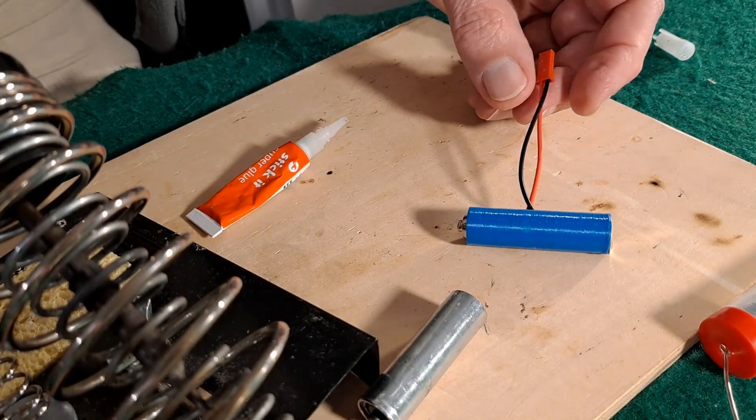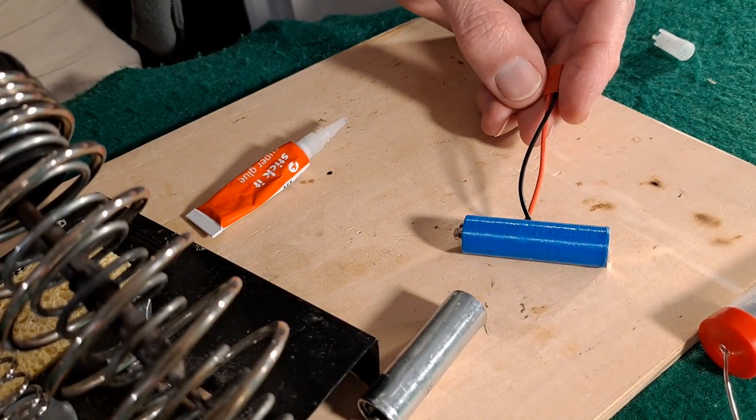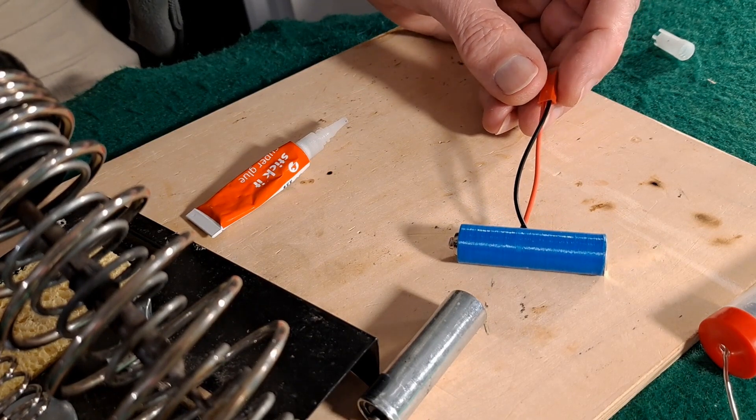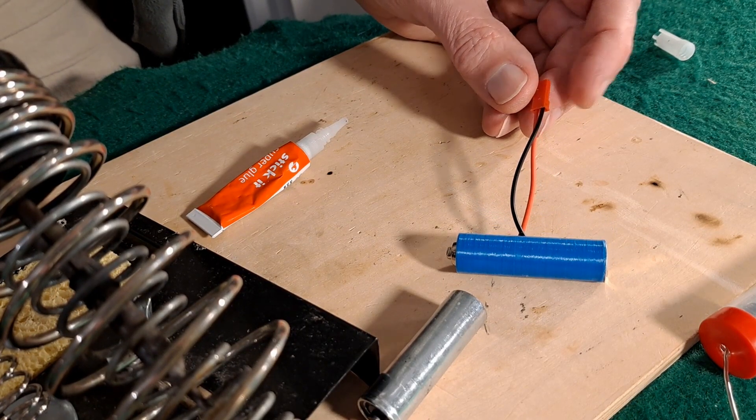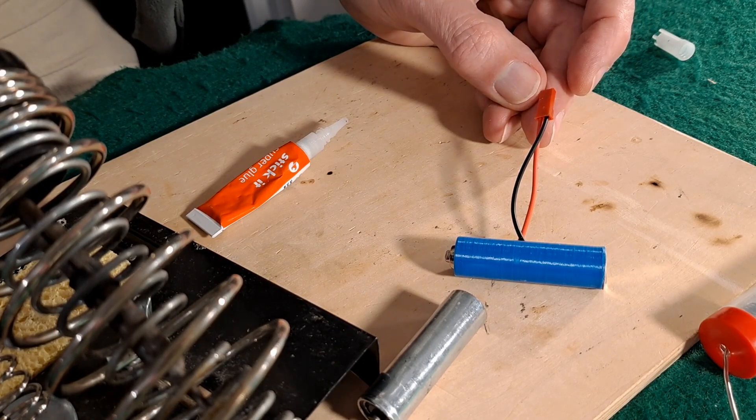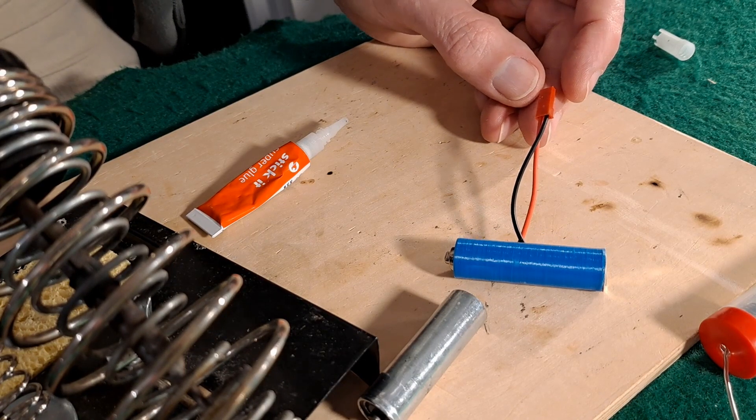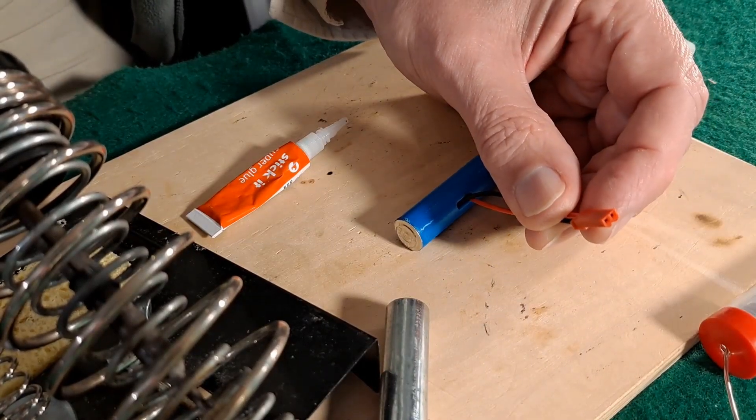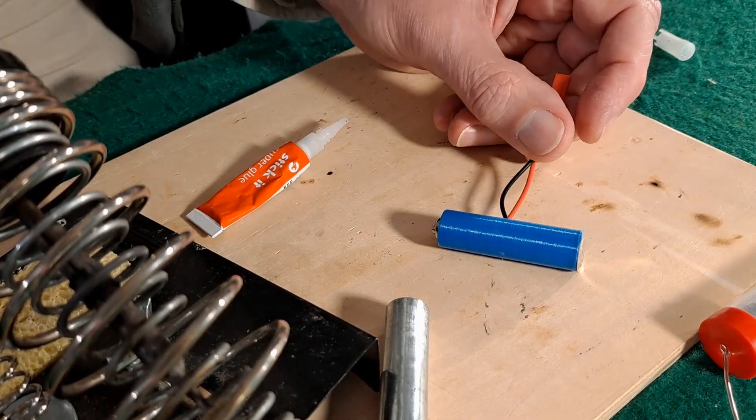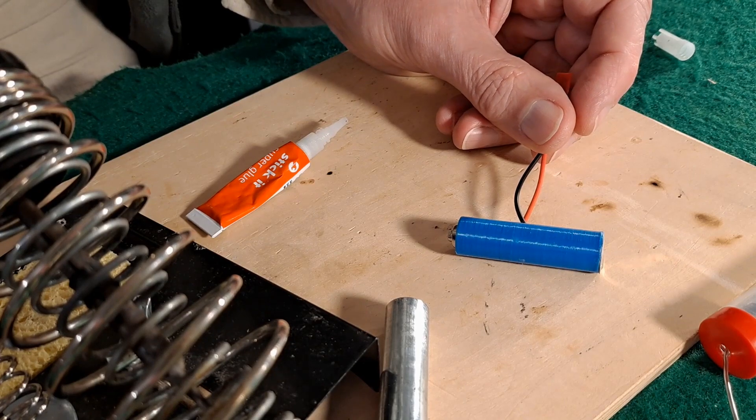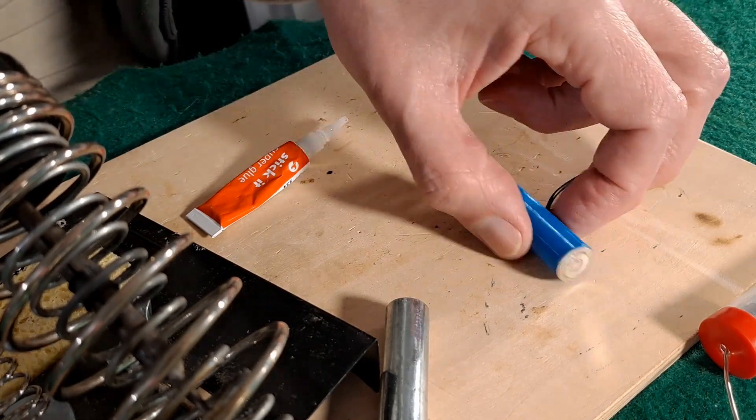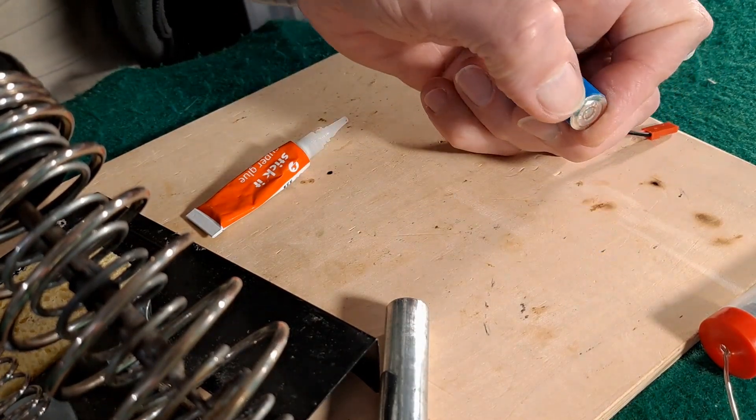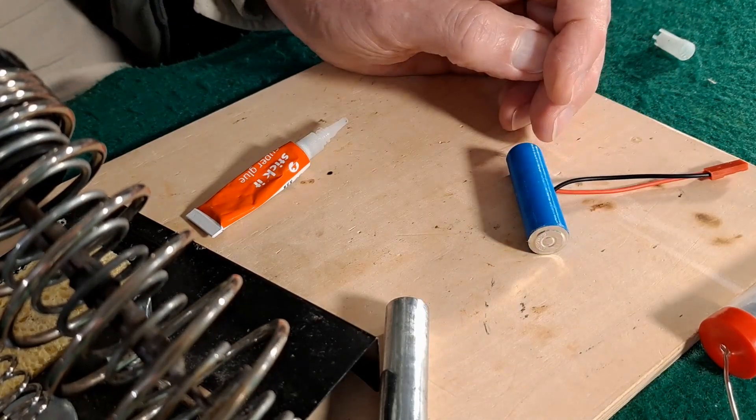So we could put, say, a 2S LiPo battery attached to this one. And I've just realized... I've just realized I've put the wrong... I should have put a female on there, not a male. Oh, how silly. Oh well, we'll find out if we can get them off again now. How silly.